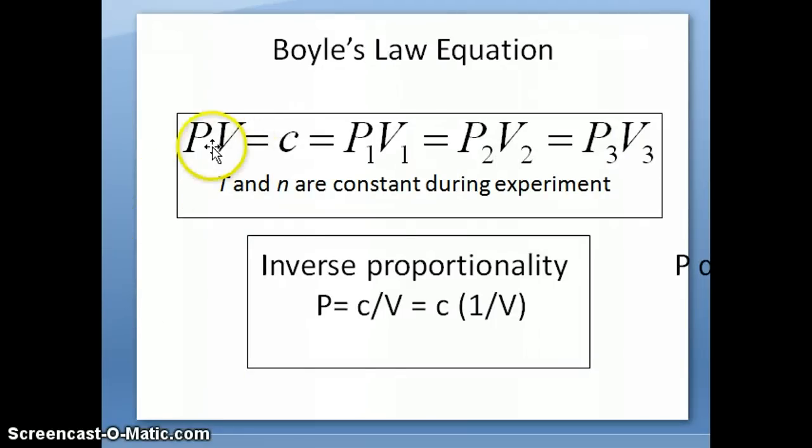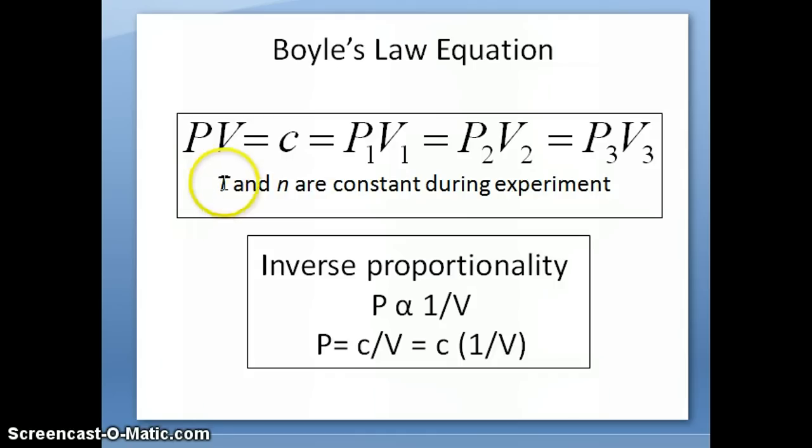Another way to write Boyle's Law is P times V is equal to C, which is a constant. Because that means that you can change the pressure and volume in different situations, we a lot of times will indicate this as subscript. This would be condition 1, condition 2, and condition 3. As long as P and V are varied, their product is always equal to this constant. At condition 1, pressure and volume multiplied together should be equal to pressure and volume at condition 2 multiplied together. The temperature and the number of moles are kept constant throughout the experiment for this equation to be true.